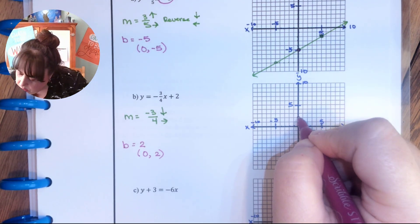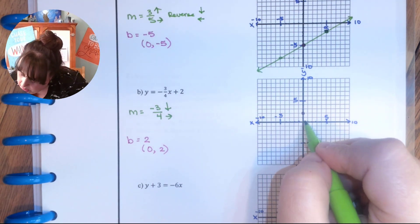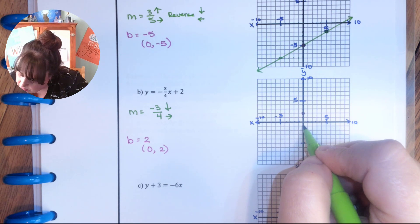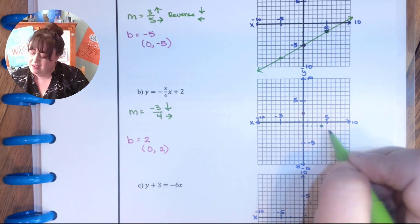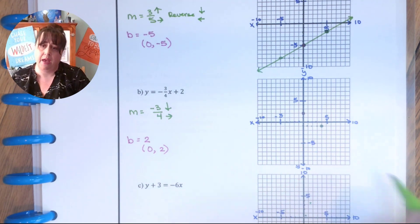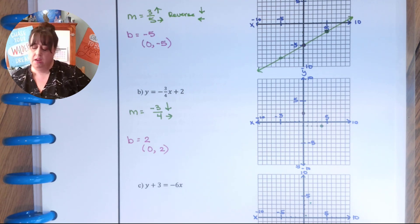So 1, 2 and then it's going to go down 3. So 1, 2, 3 and then to the right 4. 1, 2, 3, 4. I could do more if I wanted. I could stair step this all the way out this way and all the way out that way until I have all of them done. But 2 is good enough.